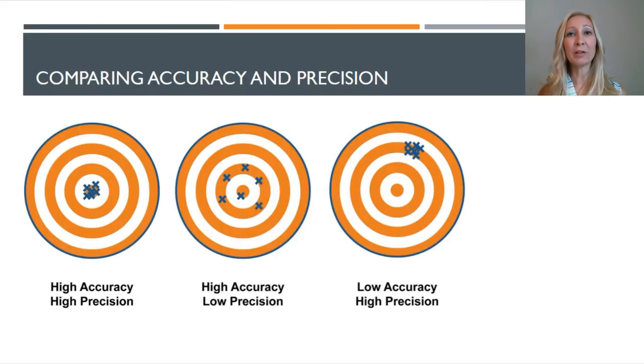If I saw an experiment with low accuracy and high precision, it would tell me that maybe one of your pieces of equipment wasn't calibrated correctly. So maybe your balance wasn't calibrated, or your thermometer had a bubble in it, because you're off by the same amount every single time, but you took a lot of care in your measurements.